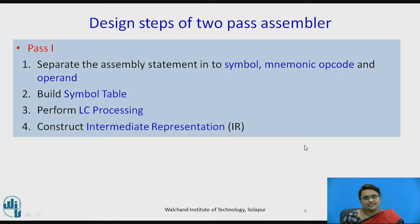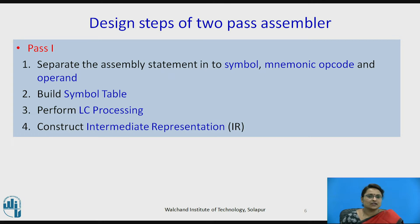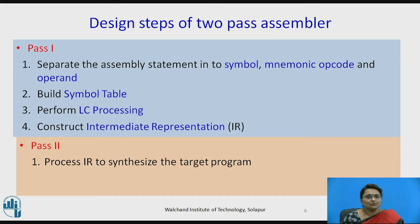Now the design steps of the two-pass assembler. In pass one there are four steps: separating the assembly statements into three parts — symbol, mnemonic opcode, and operand; building the symbol table; performing LC processing; and constructing the intermediate representation. For pass two, it processes the intermediate representation and synthesizes the target program.